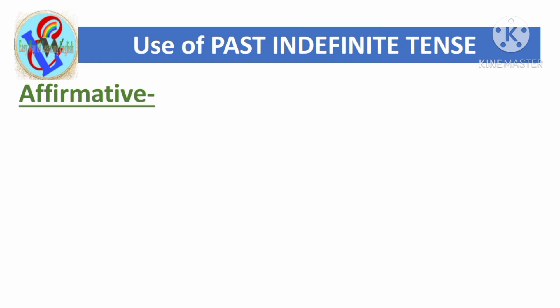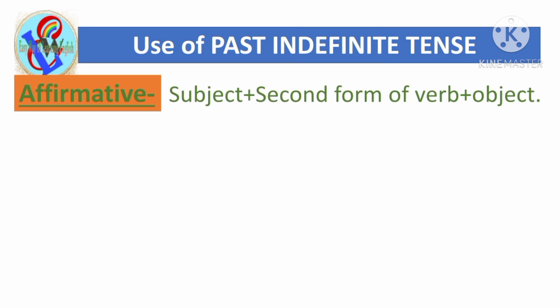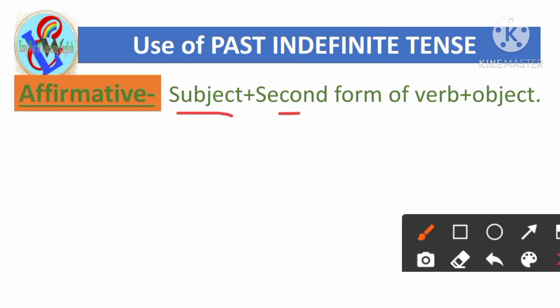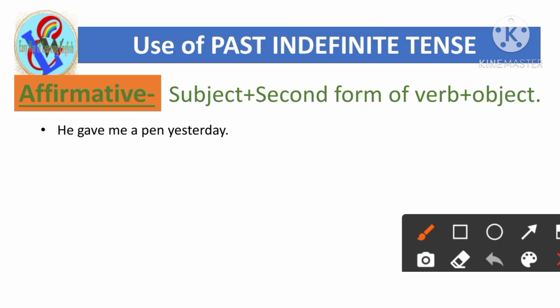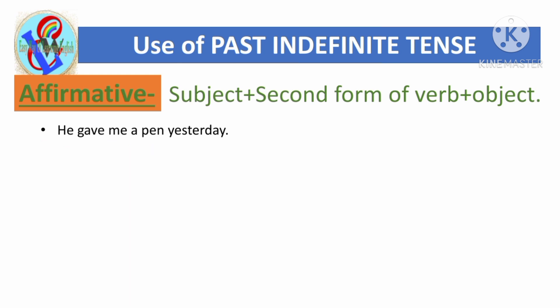Let's see how to form affirmative sentences in the past indefinite tense. The structure is: Subject + second form of verb + object. For example: 'He gave me a pen yesterday.' Here 'he' is the subject, 'gave' is the second form of 'give', and 'pen' is the object.